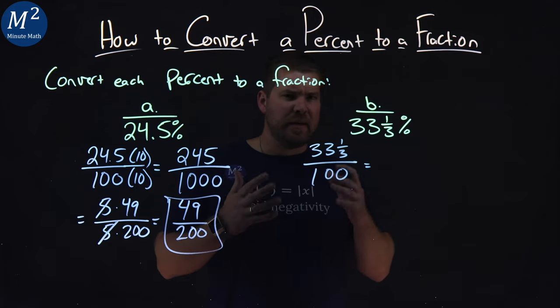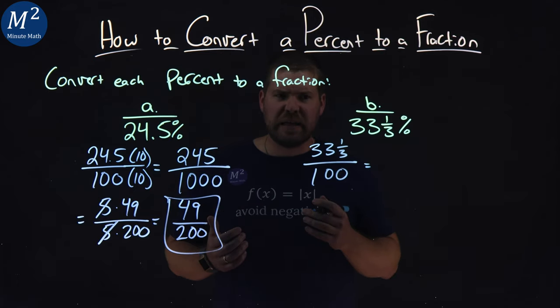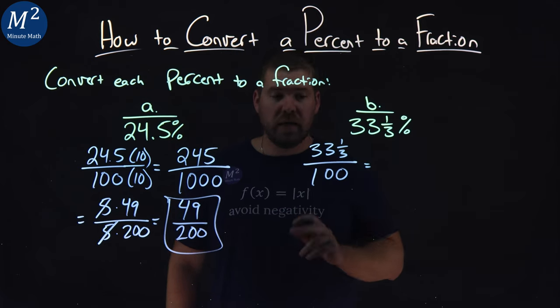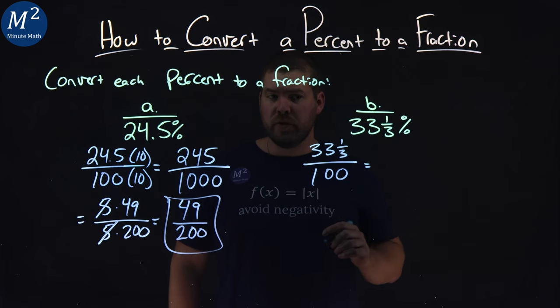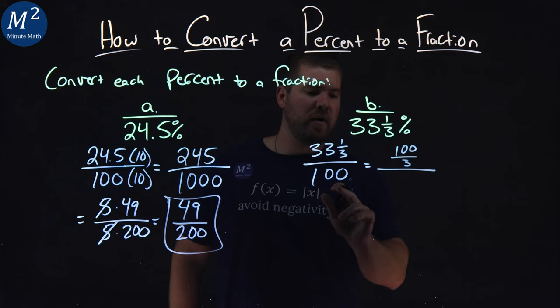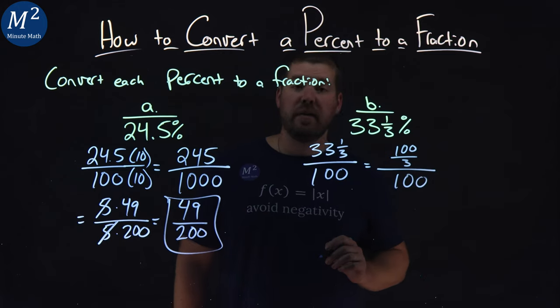Now, we're going to make this like a multiple fraction-esque thing. 3 times 33, let's make the numerator improper. 3 times 33 is 99, plus the 1 is 100. So, we have 100 over 3, all divided by 100 in the denominator.